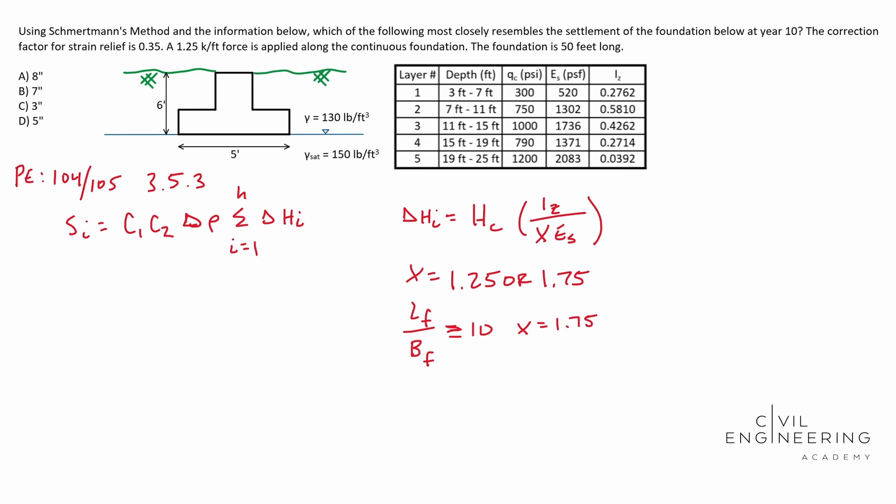So do some quick math. You'll see that the length of our foundation is 50 feet long. The width of it's five feet long, 50 divided by five. That's 10. That's greater than or equal to 10. So therefore we're going to be used 1.75 as our shape factor for this one. So we need to use that number to our advantage there.